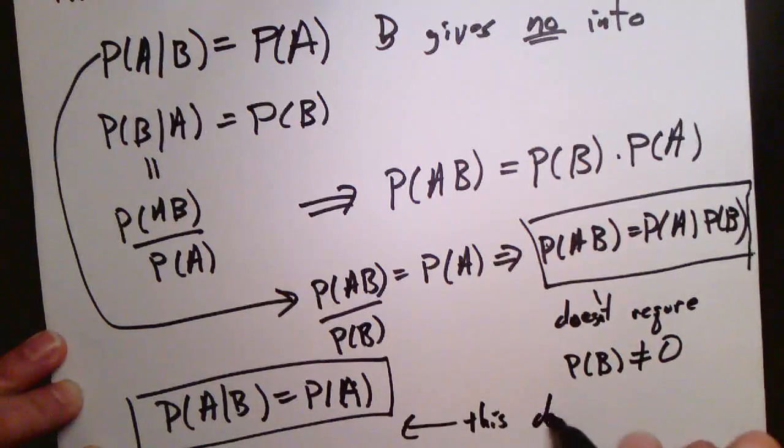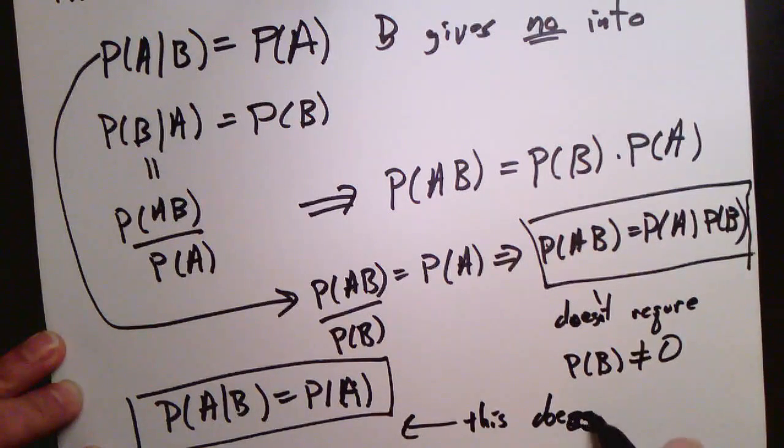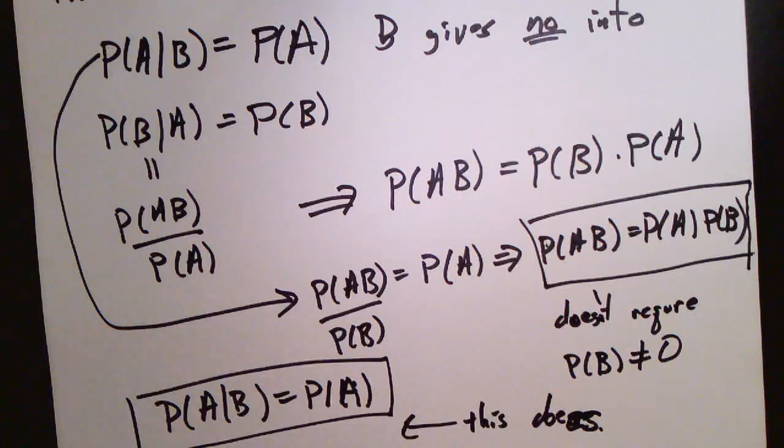It says that the probability of A happening given that we know B already happened is just the probability of A happening. That is to say knowing that B already happened in no way helps us, gives us any information about whether A happened. And while this definition requires that we know that B doesn't have zero probability, it's a little bit more intuitive than the product definition.